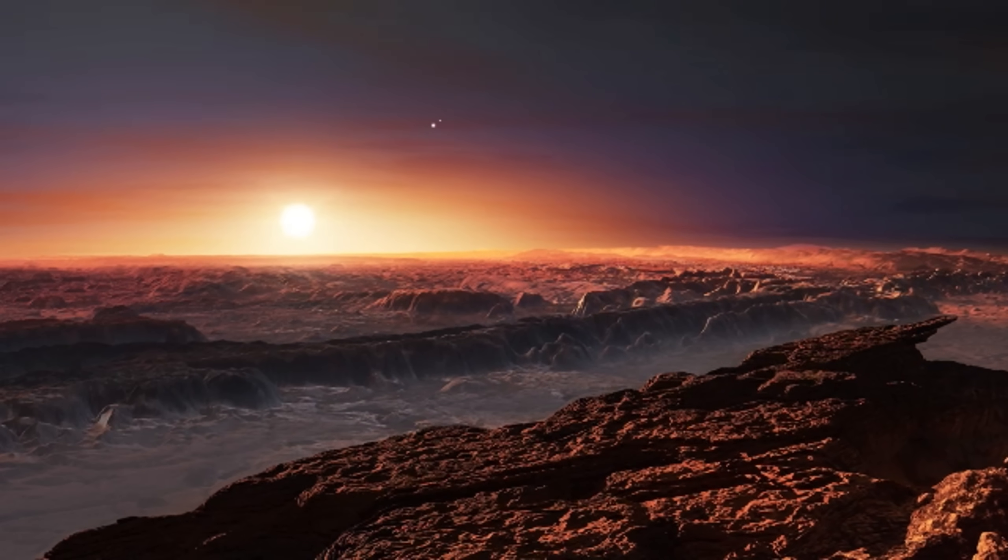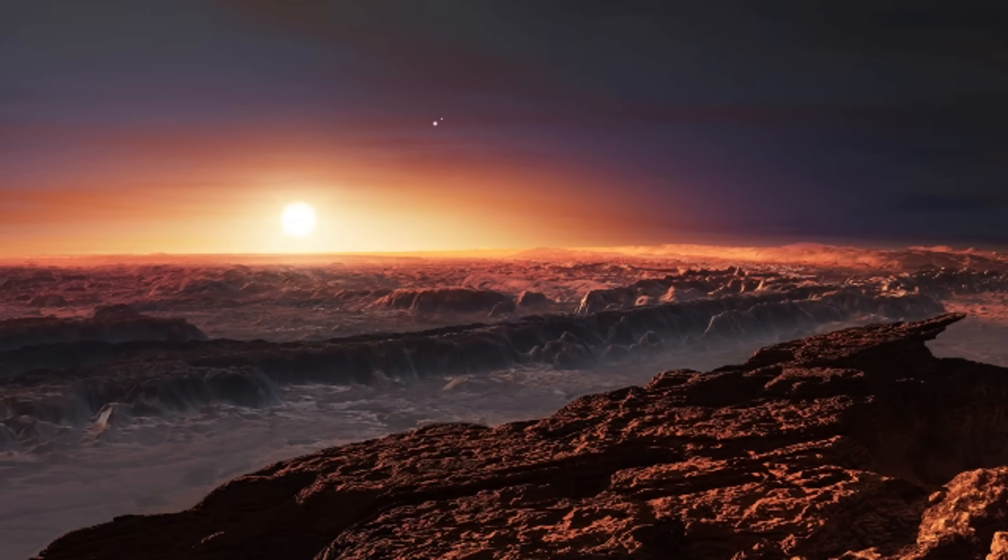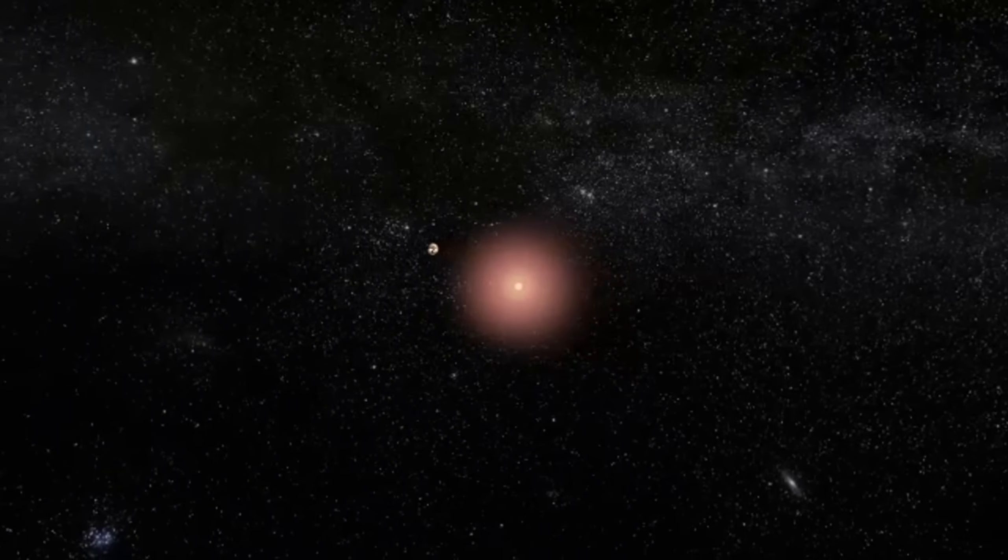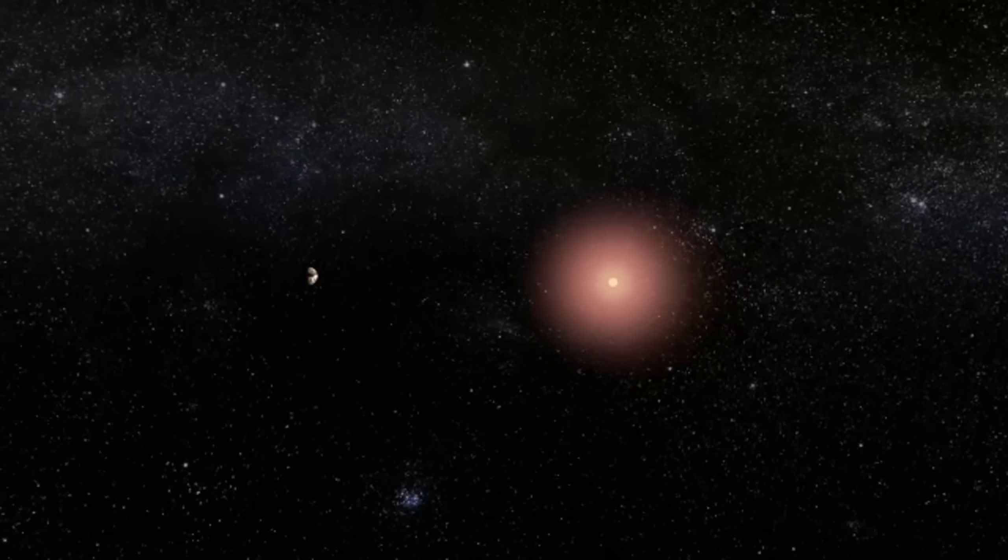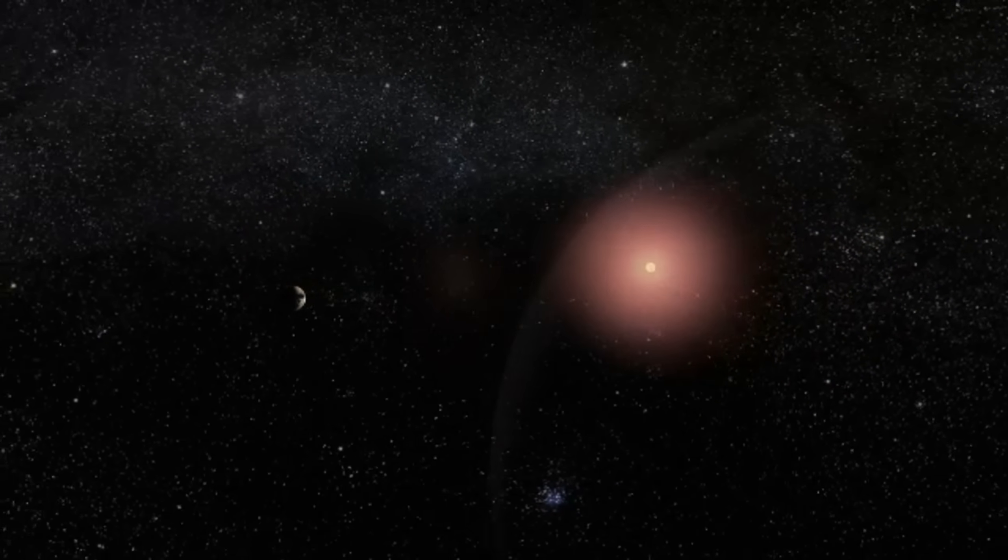Surprisingly, Proxima Centauri B receives about the same amount of solar energy from its star that Earth does from our Sun. Does this indicate that there is water, possibly even life, on its surface?